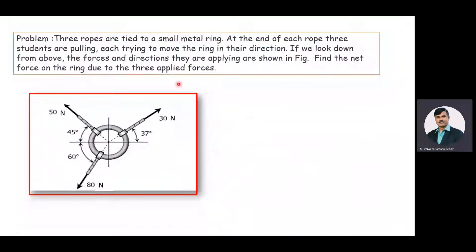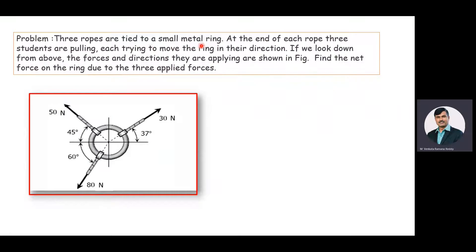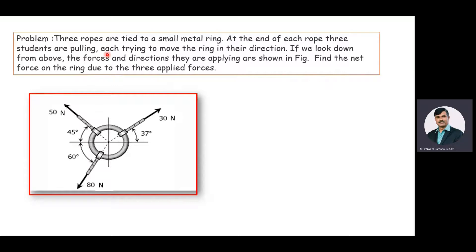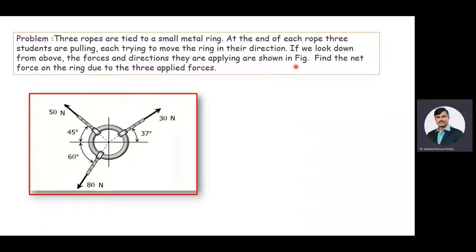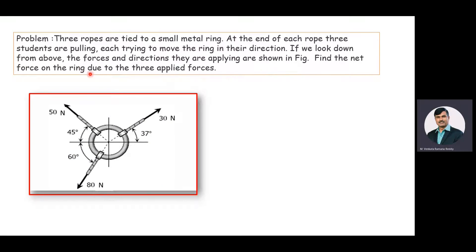The given problem is: three ropes are tied to a small metal ring. At the end of each rope, three students are pulling, each trying to move the ring in their direction. If we look down from above, the forces and directions they are applying are shown in the figure. Find the net force on the ring due to the three applied forces.